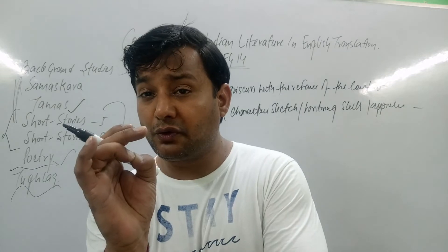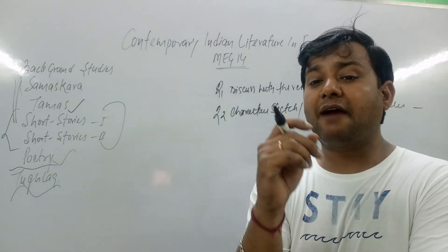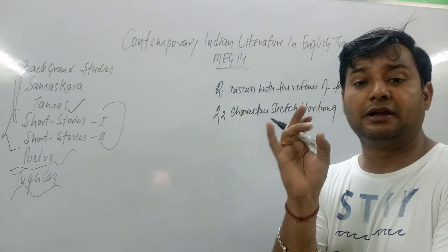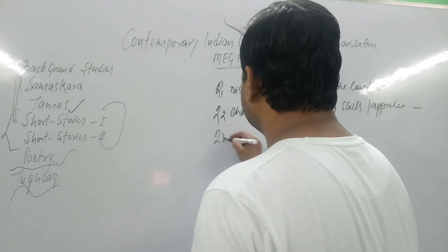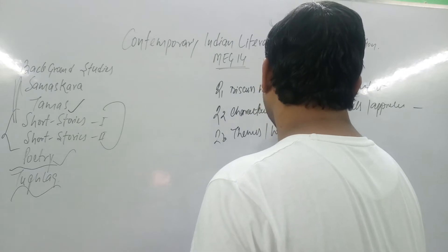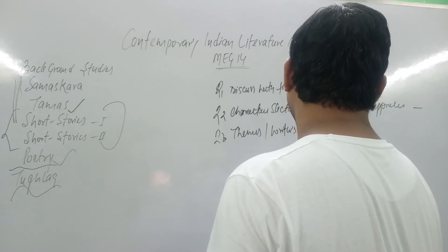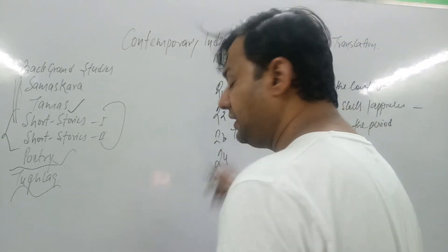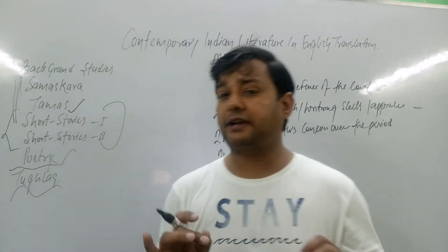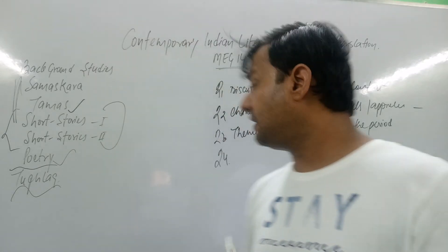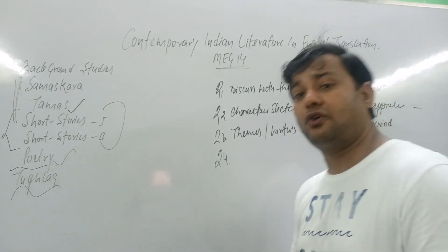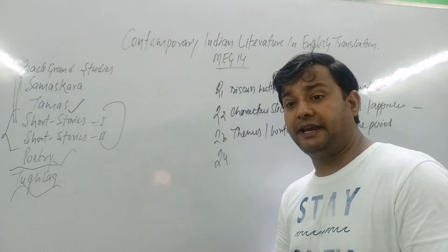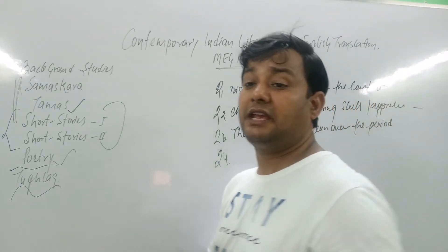Then move to the third question — we need to work on the themes and how to work them out. Then we have to work out the writer's concerns over the period, which is really important. The third question covers themes, and then writer's concerns over the period — what are the concerns of writers in that period? That is necessary to know and very important.